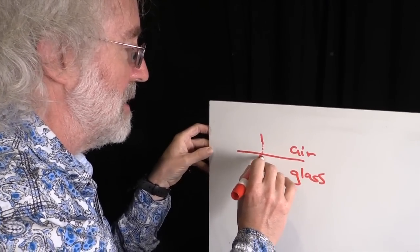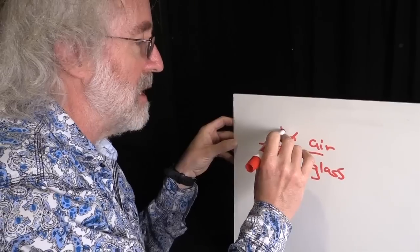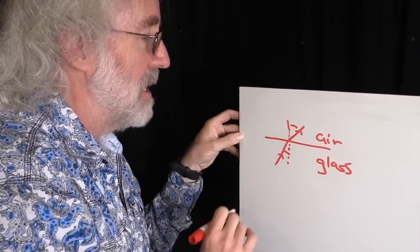Light always bends when it's at a boundary between two different media. And when it goes from glass into air, it bends so the angle is bigger, so this angle is bigger than this angle.